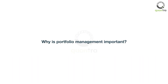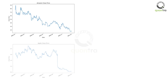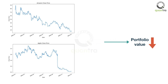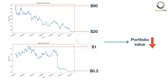Why is Portfolio Management important? Let's say that your portfolio consisted of Amazon and Apple in the year 2000. These are both tech-related stocks. When the tech bubble burst, your portfolio value would have declined sharply. Amazon declined from $90 to $20 in a year, and Apple declined from $1 to $0.20. Your portfolio would have gone down by 78%.